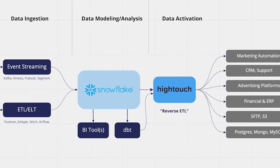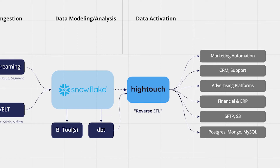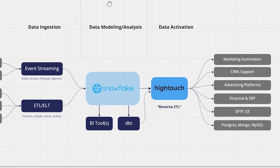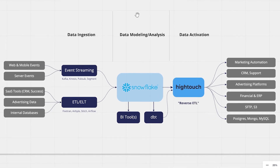HighTouch is the platform you can use for data activation. Once the data is in Snowflake, if you want to share that data across all your different business teams, every team has a SaaS tool they live out of. For sales teams, that's Salesforce. For marketing teams, that can be platforms from Adobe to Braze to advertising platforms. For finance teams, that might be an ERP system. With HighTouch, you can take the data from Snowflake and move it to those systems so that Snowflake can be the single source of truth that powers not just analytics, but also your business operations across these tools.